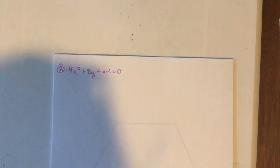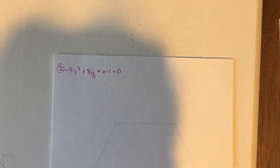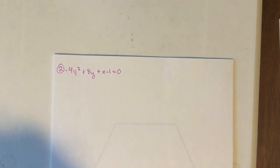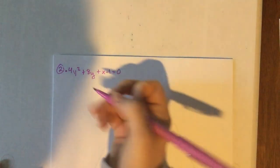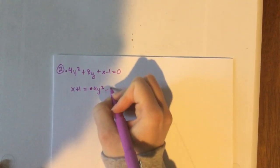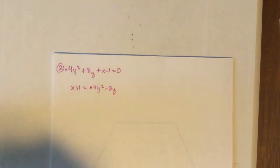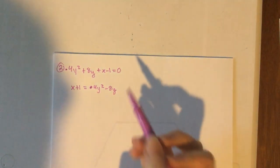So, negative 4y squared plus 8y plus x minus 1 equals 0. Pause the video once you have that written down and go ahead and try to find, complete the square and try to find the equation. So what we always want to do to get started is get our y's on the same side and keep our x's on. Because I have a negative leading coefficient, I'm just going to move that over. So I'm going to have x plus 1 equals negative 4y squared, sorry, it is early. Positive 4y squared but minus the 8y.